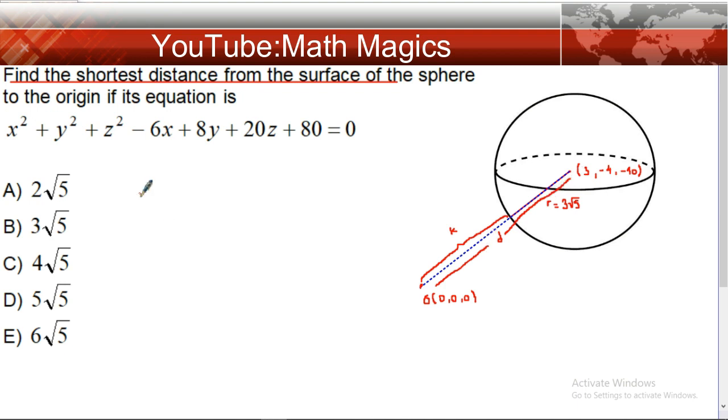To find k, we first find the distance from the center to the origin using the distance formula: √[(3-0)² + (-4-0)² + (-10-0)²] = √(9 + 16 + 100).